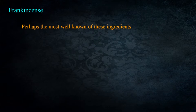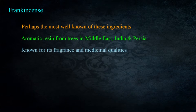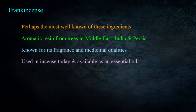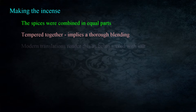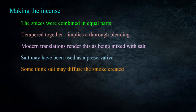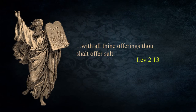Frankincense is perhaps the most well known of these ingredients, deriving from an aromatic resin from trees in the Middle East, India, and Persia, known for its fragrance and medicinal qualities. Frankincense remains a staple in the manufacture of incense today and is readily available as an essential oil. The spices were combined in equal parts, and the instructions stated they were to be tempered together, implying a thorough blending. Most modern translations render this as being mixed with salt, which may have been used as a preservative, and salt may also have helped diffuse the cloud of smoke. Salt accompanies various sacrifices — God told Moses, 'With all thine offerings thou shalt offer salt' — Leviticus 2:13 — providing a common element linking offerings with each other in God's declaration of their holiness.